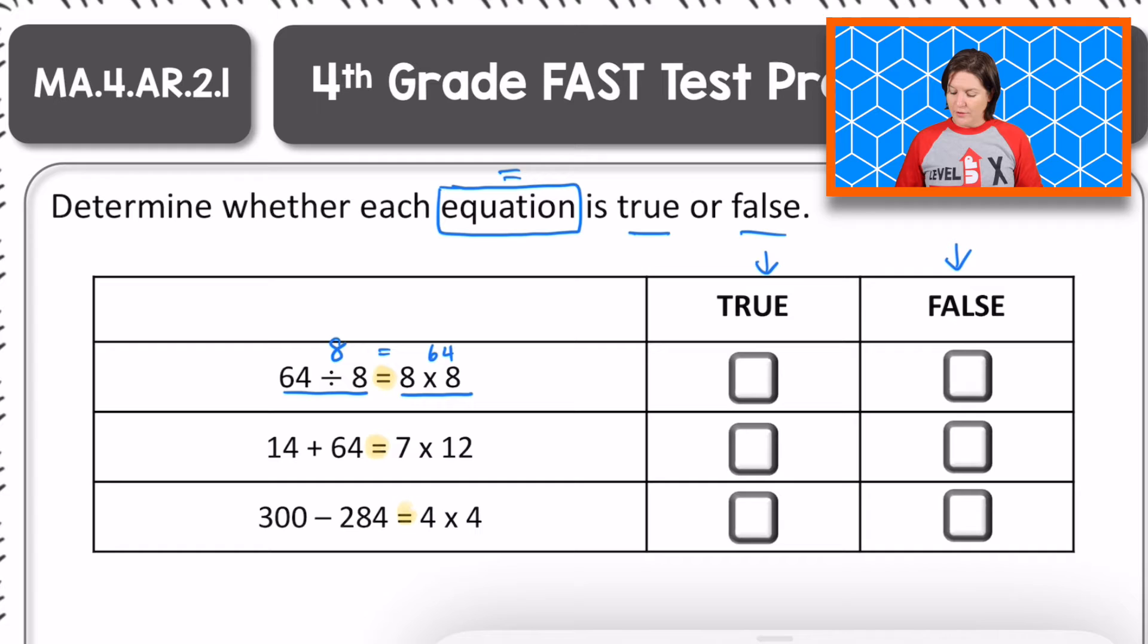So we scan all the way over and match it up. That's why it's called matching item. You match it up with the column that you're looking for. We want the false column for this one. And we would select that one.